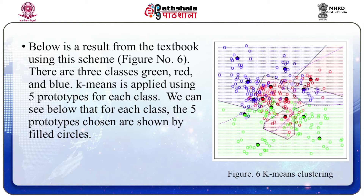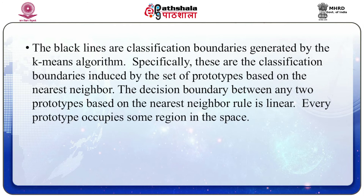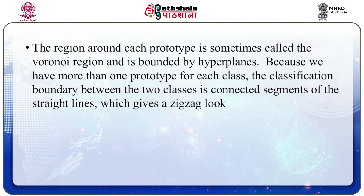There are three classes — green, red, and blue — and k-means clustering is applied using five prototypes for each class. For each class the five prototypes chosen are shown by filled circles. According to the classification scheme, for any new point among these 15 prototypes, we find the one closest to the new point, and depending on the color code of the prototype, the corresponding class is assigned. The black lines are classification boundaries generated by the k-means algorithm — specifically, the boundaries induced by the set of prototypes based on the nearest neighbor rule. The decision boundary between any two prototypes based on the nearest neighbor rule is linear. Every prototype occupies a region in space, sometimes called a Voronoi region, bounded by hyperplanes. Because we have more than one prototype per class, the classification boundary between two classes is connected segments of straight lines, giving a zigzag look.